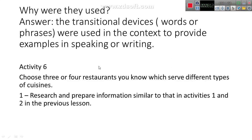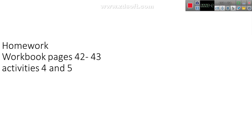Let's move to the last activity in our coursebook, activity number 6. Choose three or four restaurants you know which serve different types of cuisines. Research and prepare information similar to that in activities 1 and 2 from the previous lesson. Homework: in your book, pages 42 — activities 4 and 5. Have a nice day. Bye bye.